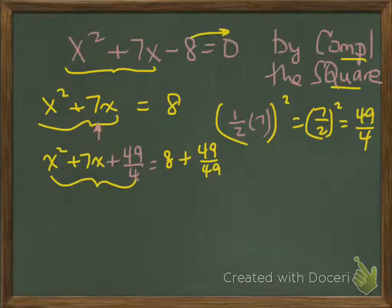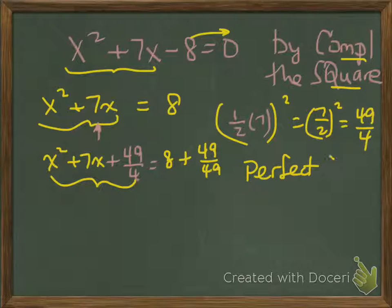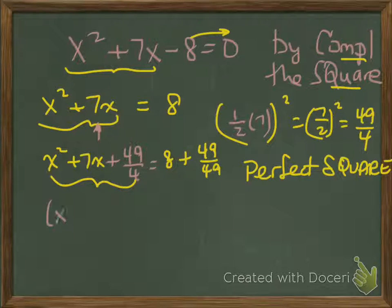Now what we have on the left side is a perfect square. When we have a perfect square, that means we can factor it. Factoring it results in x plus 7 halves squared, which expands to the trinomial immediately above.